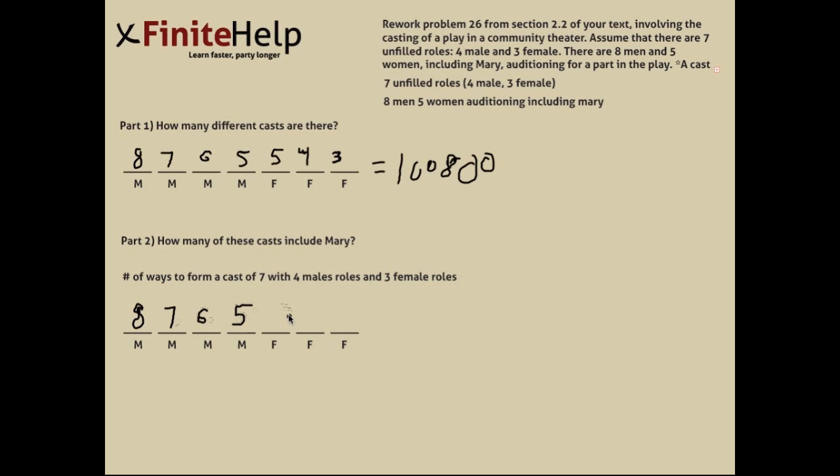Now for our females, that's where we make a little bit of a change. There's three female roles, and there are five women auditioning, and we're trying to find those casts that don't include Mary. So basically we'll just subtract Mary from the set of five women. And then that leaves us four women to choose from, and then three, and then two.